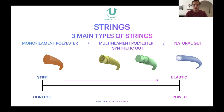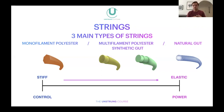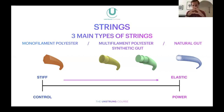First we have monofilament polyester. Then we have multifilament polyester, which I've grouped together with synthetic gut. And then we have natural gut. Monofilament polyester is made from pellets of polyester added to a big hopper — different pellets determine the outcome of the string for color, durability, playability, stiffness, and so on. All these pellets are melted down and single-extruded into one piece of string, which could be round or octagonal.